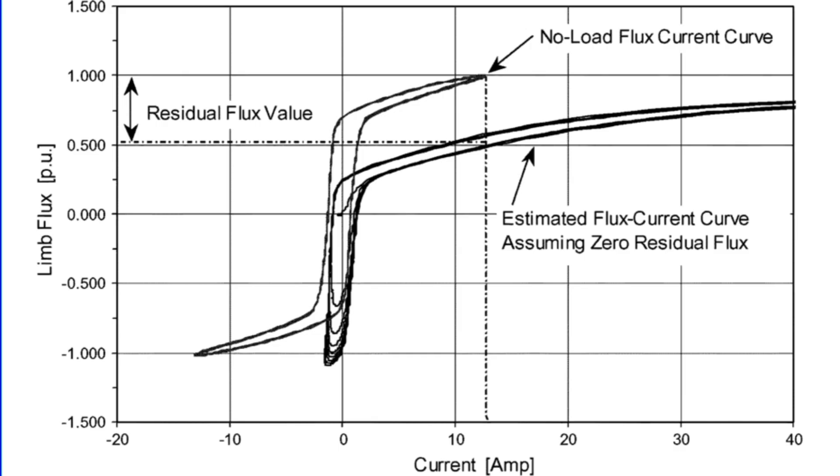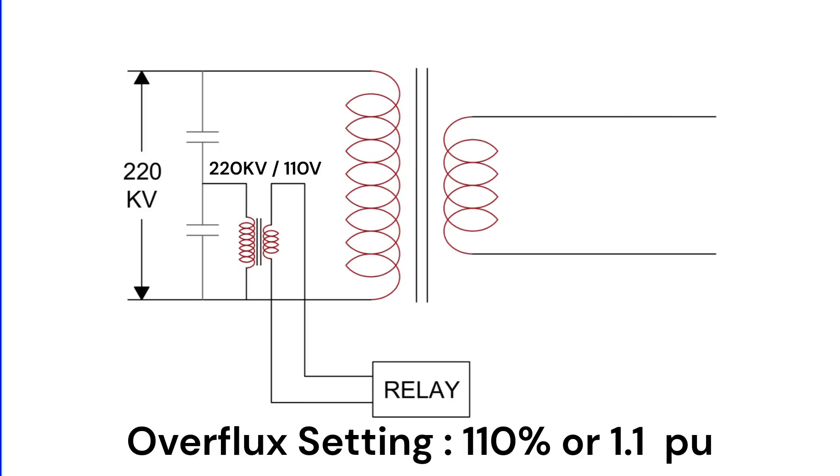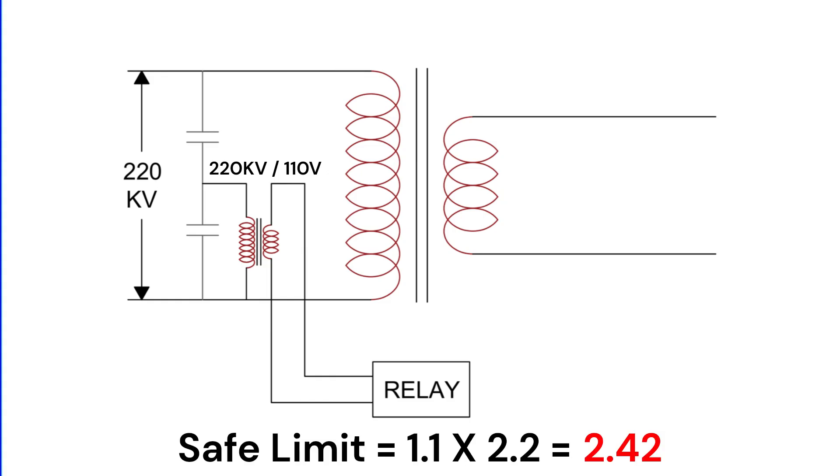To determine the safe operating limit, we look at the hysteresis curve of the core material. Typically, the overflux protection is set at 110% of the nominal value, or 1.1 per unit. So, for our example, the safe limit is 1.1 times 2.2 equals 2.42. If the V over F ratio exceeds 2.42, the transformer core is at risk of overfluxing.